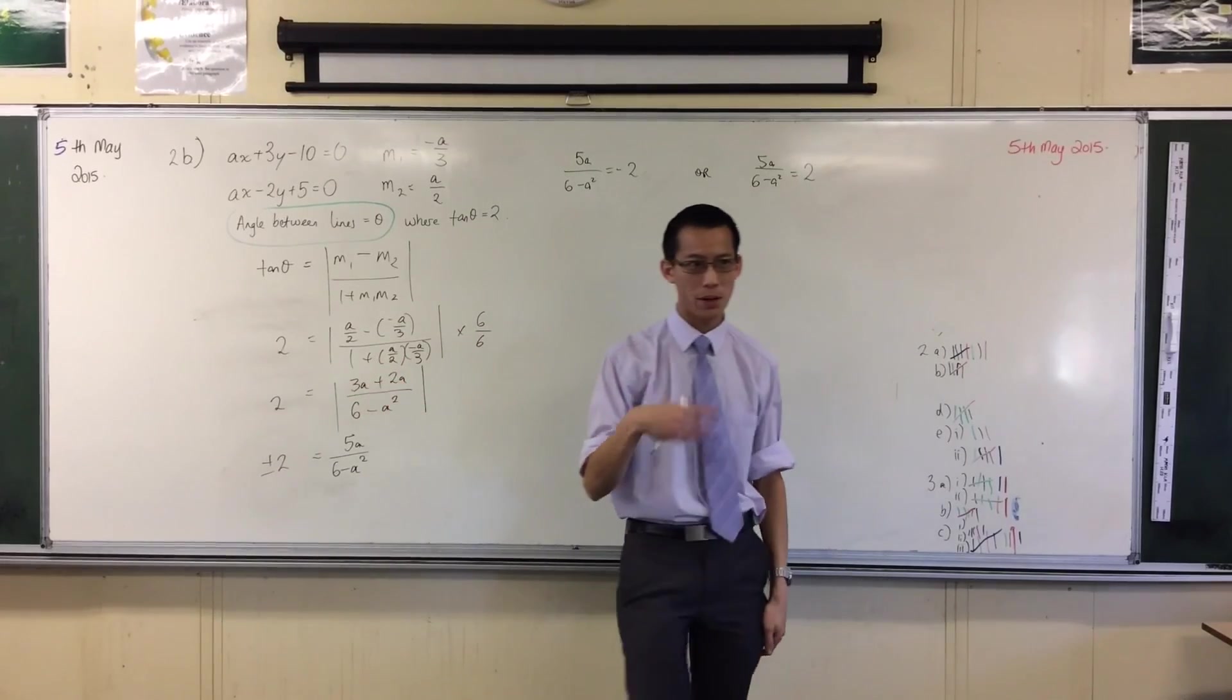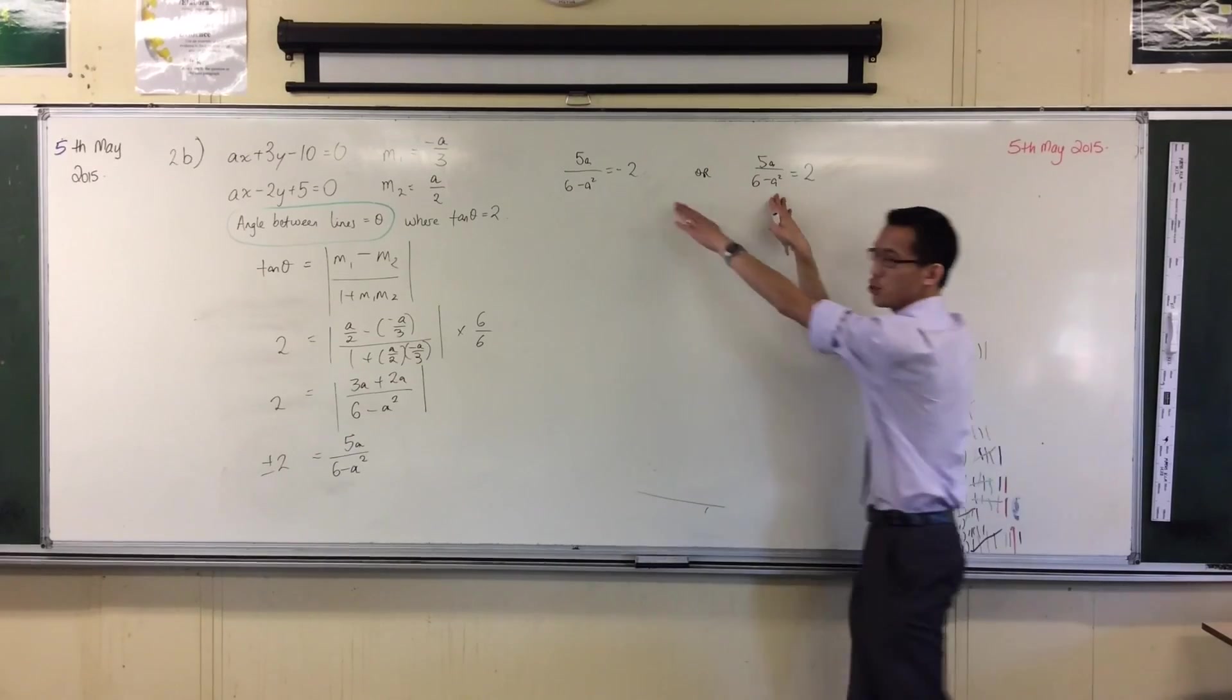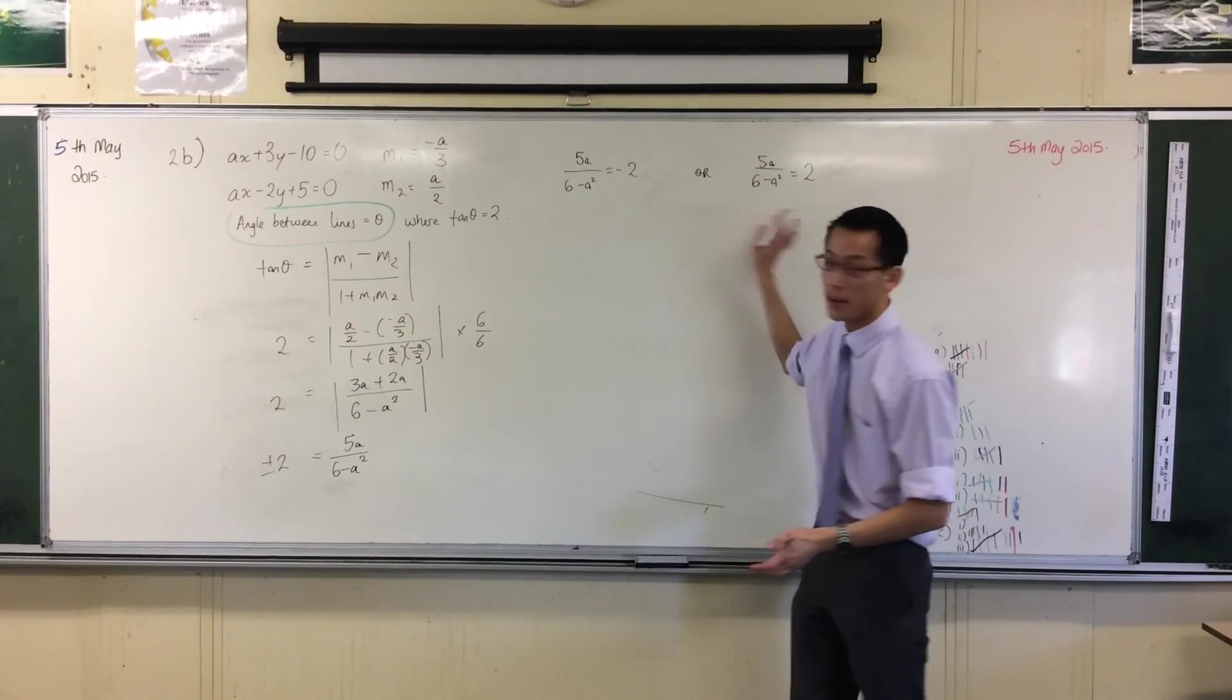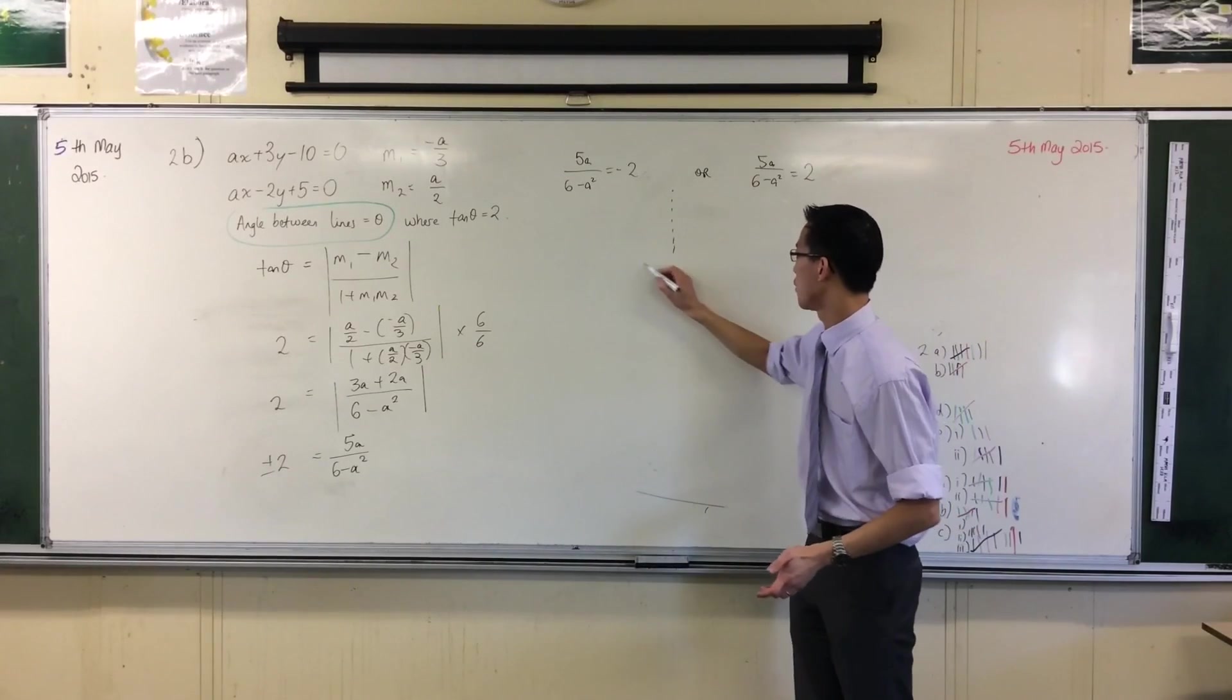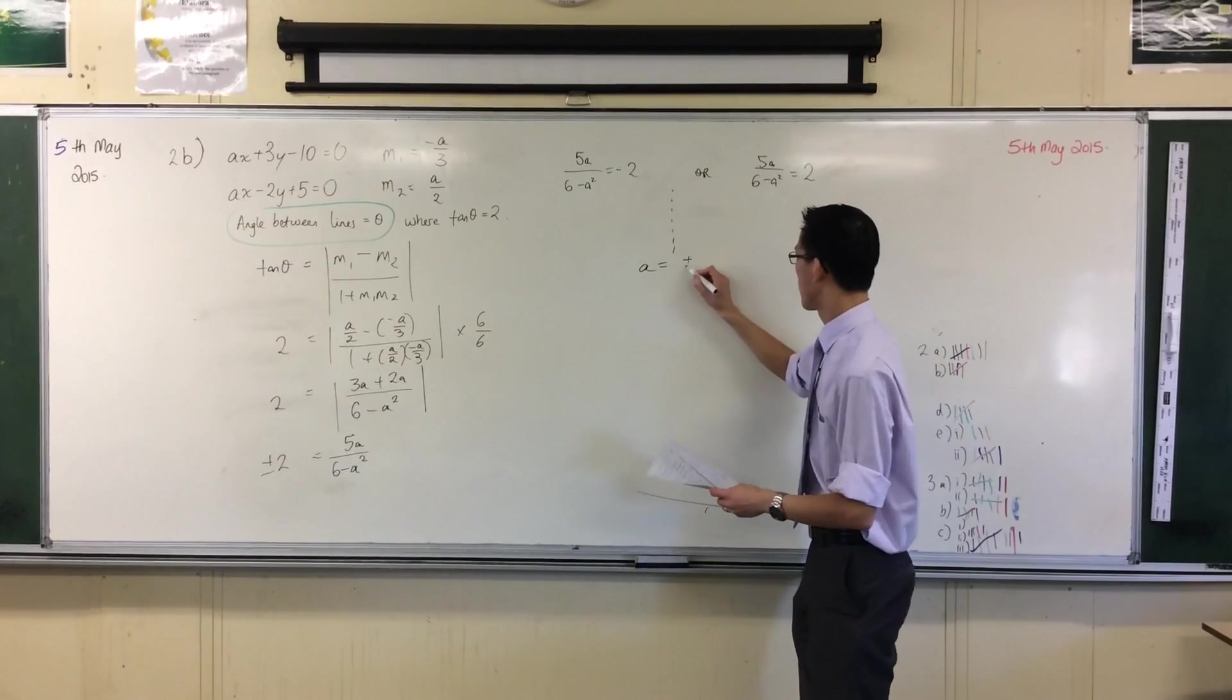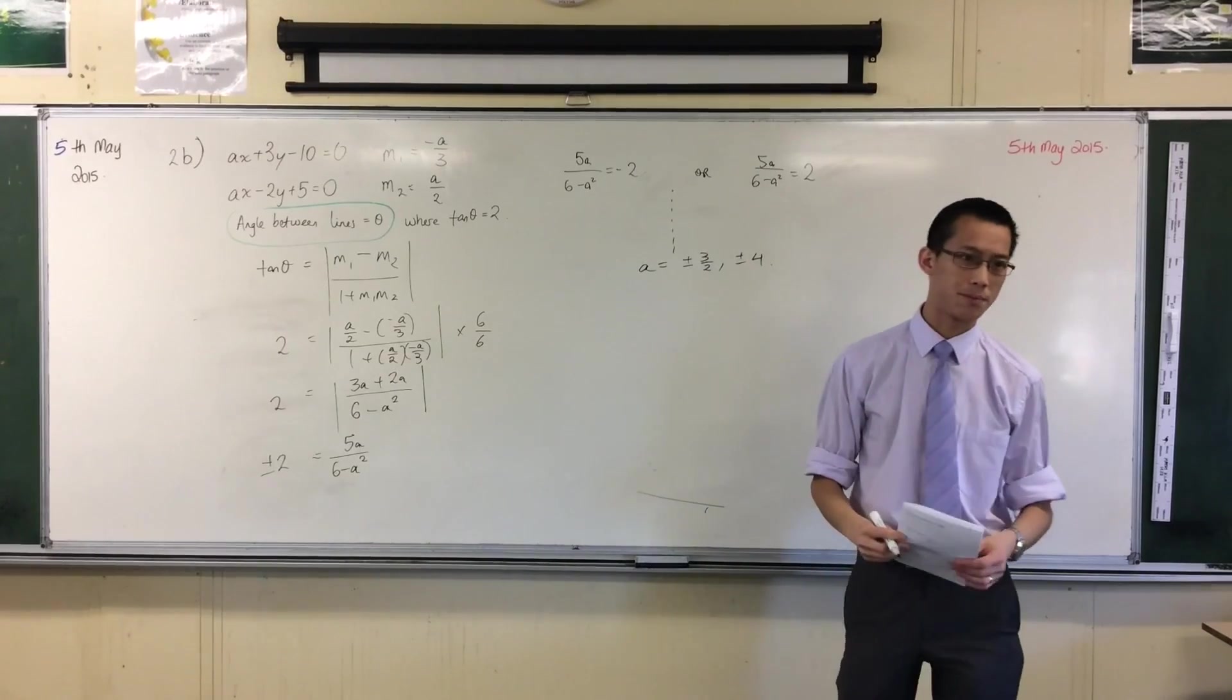Up here the difference between five a giving you a negative and five a being a positive is the solutions you get out of this will just be plus or minus each other. That's all you're going to get. So once you've converted these into a quadratic you solve, that's how you get to your four solutions - plus or minus one and a half.